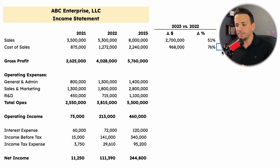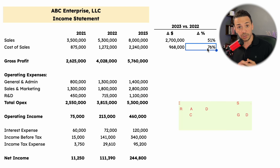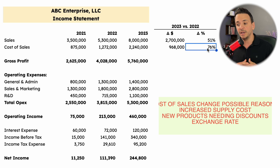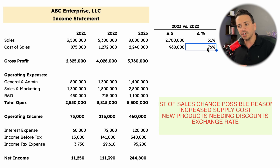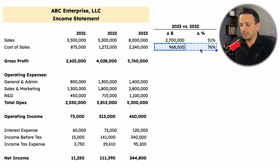Applying the same formula to cost of sales, we see it increased by 76%, which is not good because cost of sales is growing at a higher pace than revenue. This could indicate that supplier costs went up, the product mix shifted to items with higher initial discounts, or there are unfavorable exchange rates on overseas supplies. You want to quantify how much is attributable to supplier price increases, unfavorable exchange rates, or product mix, and provide commentary. Gross profit, as a result, only went up 43% — less than the 51% revenue increase — because cost of sales is outpacing sales growth.